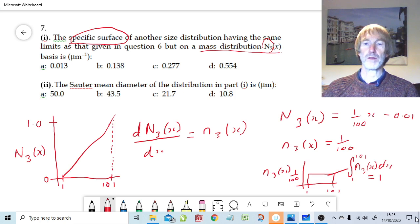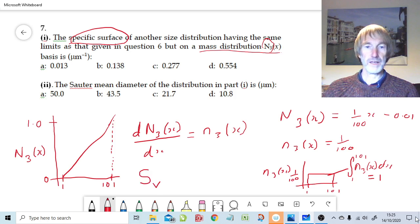Very similar mathematics, only here we're talking about a mass distribution rather than the number distribution. To a certain extent, that's where the similarity ends, because we haven't used an equation, because we're tasked with finding out the specific surface area per unit volume, and the equation for specific surface area per unit volume that we're going to use is this.